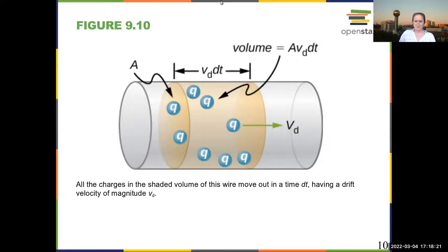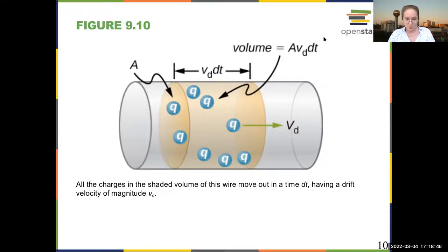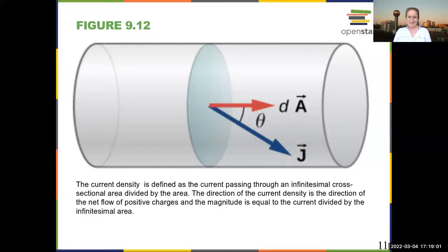As you have charges moving through the material, you can measure the volume of charge by the drift velocity times the time, and then times the area, which gives you the total volume. The current density is defined as the current passing through a small cross-sectional area divided by the area — how much current there is in a given segment of the conductor.